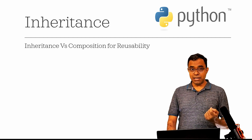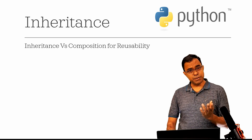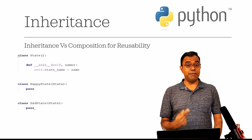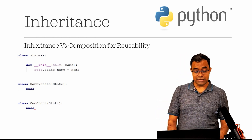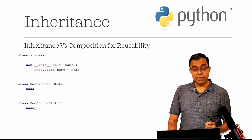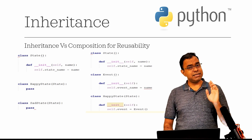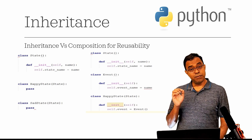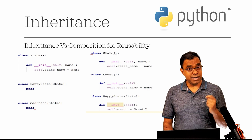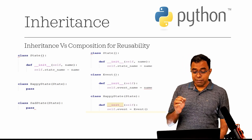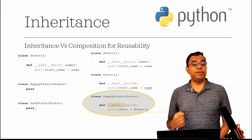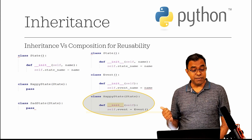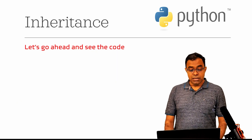You can reuse code by inheritance as well as by composition. In the first example, I have a class State with two states derived from it — Happy State and Sad State. That is inheritance. In the second example, I also have a class Event, but instead of deriving State from Event, I create an instance of Event inside the init function. That approach is called composition.